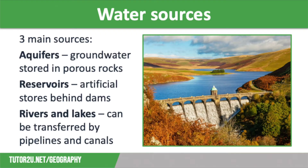Our water comes from three main sources. Our first source are aquifers. This is groundwater that is stored in porous rocks below the earth's surface and is extracted by drilling boreholes or wells, which bring the water to the surface, usually by a pump.